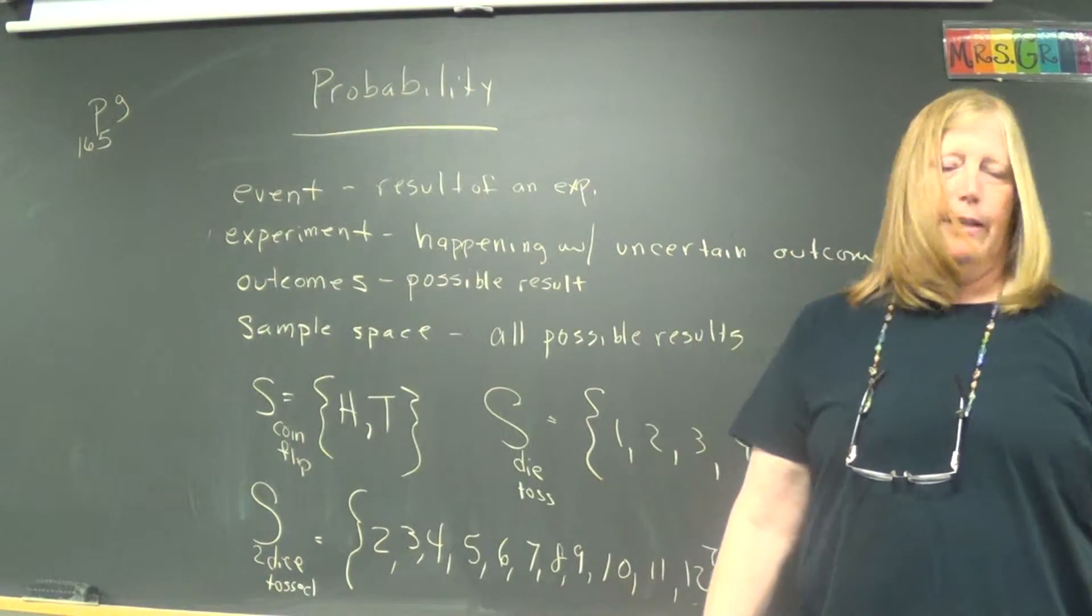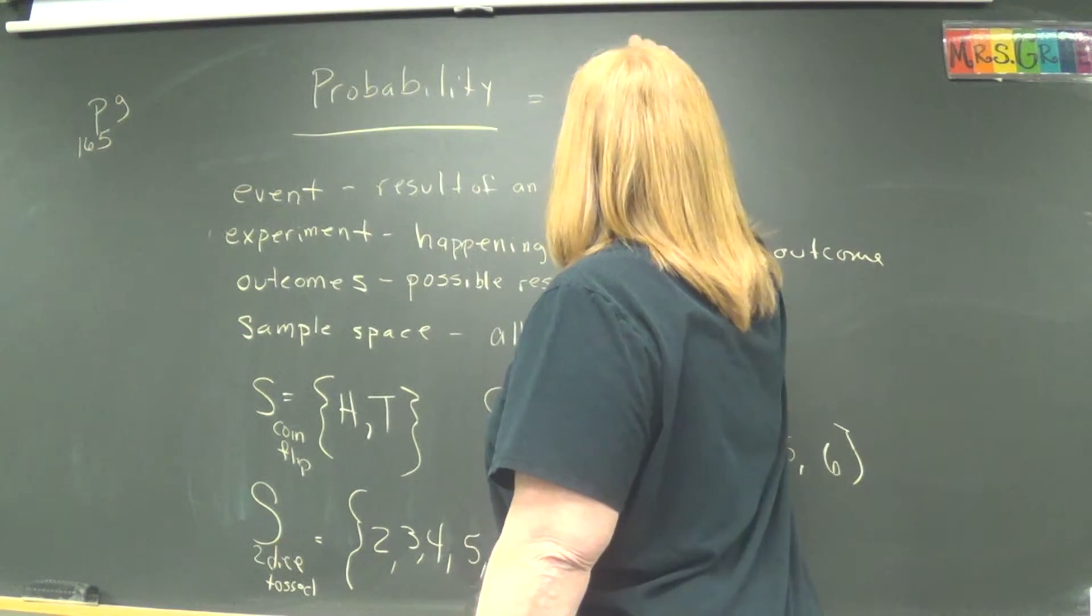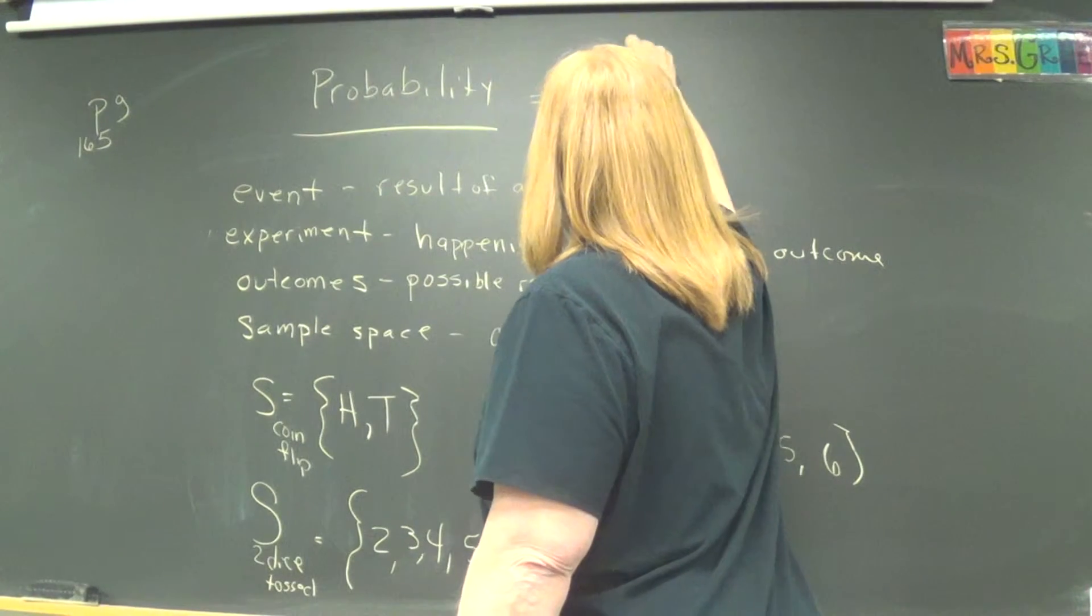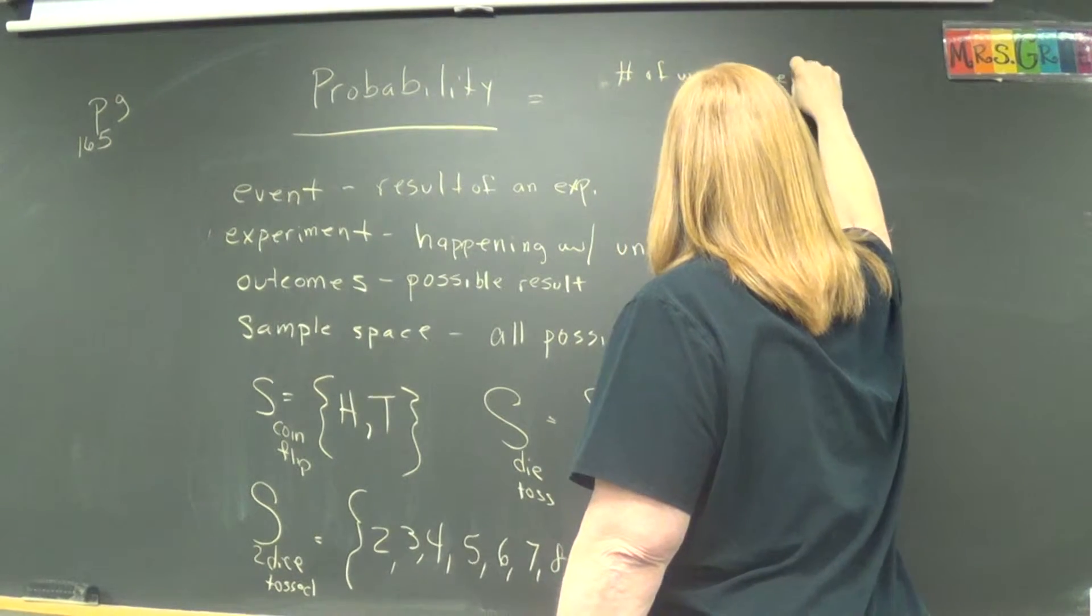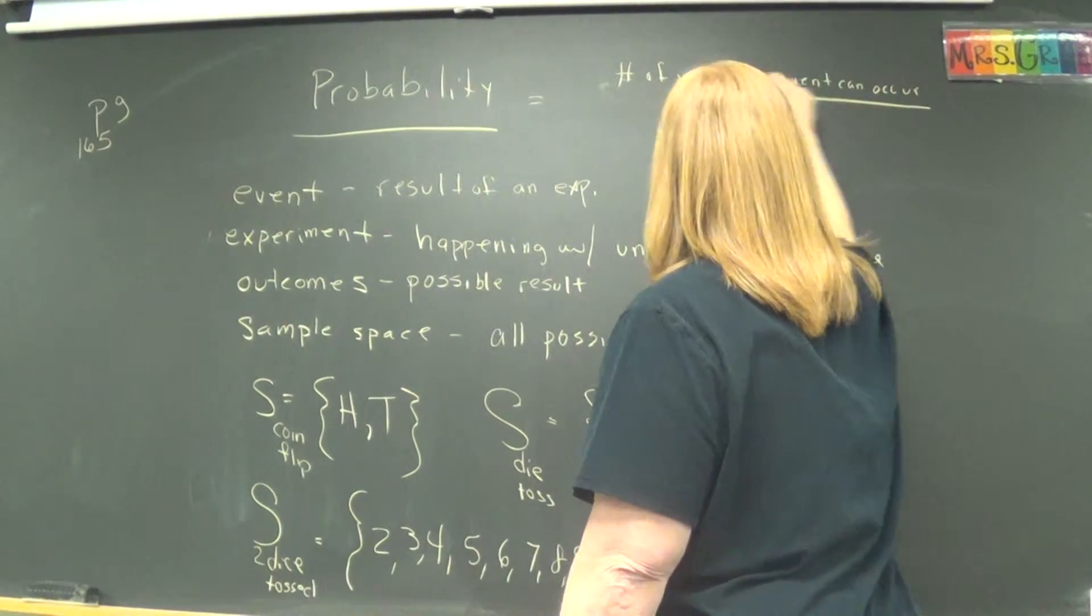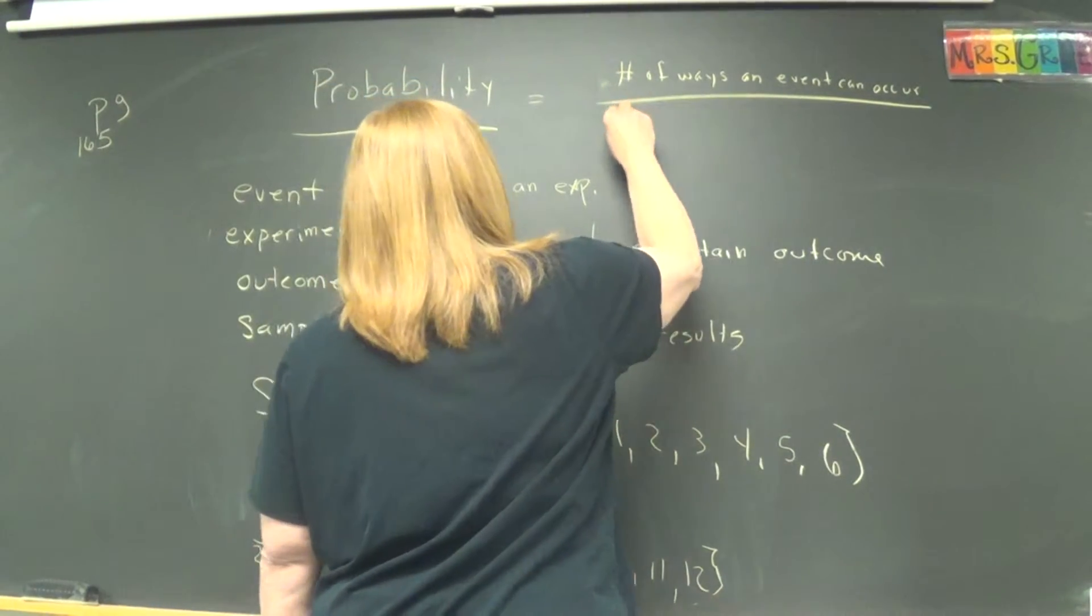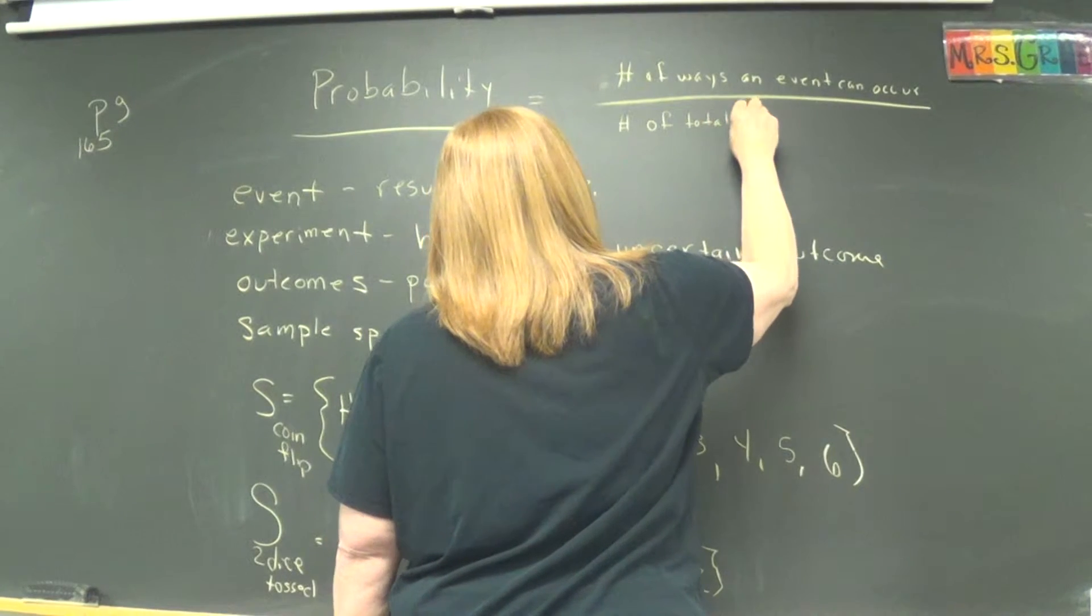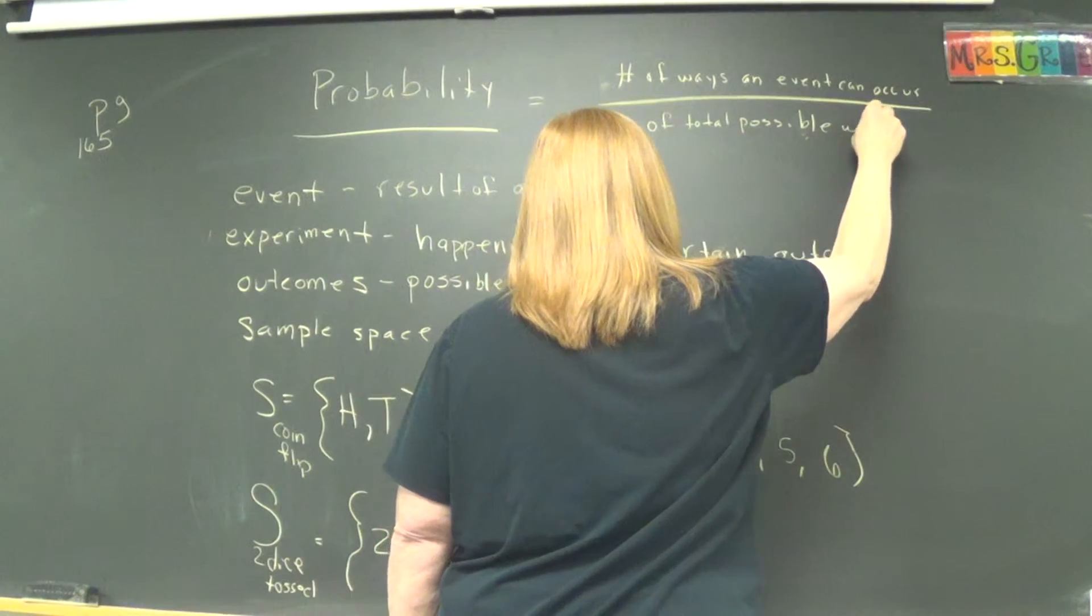All right. Good. All right. Let's actually then define probability and actually take some. Probability is a fraction. It's the number of ways an event can occur. And it's sort of a counting thing, which is why we've been practicing, divided by the number of total possible ways. All right. I'll pause while you get that.